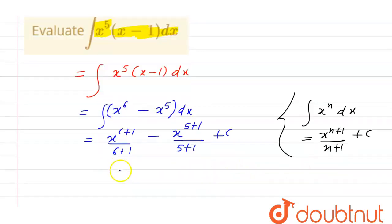This is equal to x raised to the power 7 divided by 7 minus x raised to the power 6 divided by 6 plus c. Thank you.